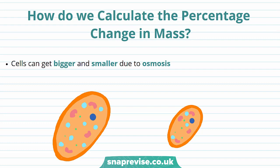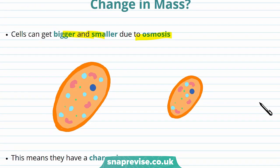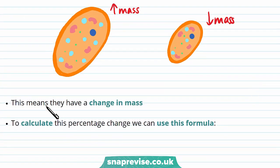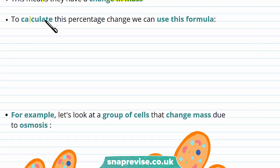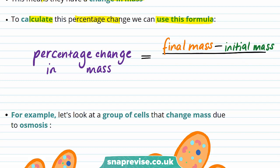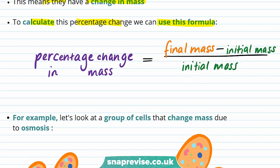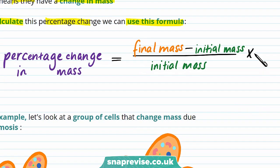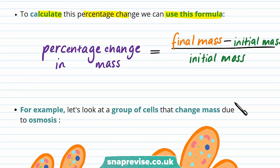Cells can get bigger and smaller due to osmosis. As cells take in water due to osmosis, the cells swell up and the mass increases. As the cell loses water due to osmosis, the cell shrinks and the mass decreases. We can calculate the percentage change in mass using this formula: percentage change in mass equals the final mass of the cell, take away the initial mass of the cell, divided by the initial mass, then times 100%.